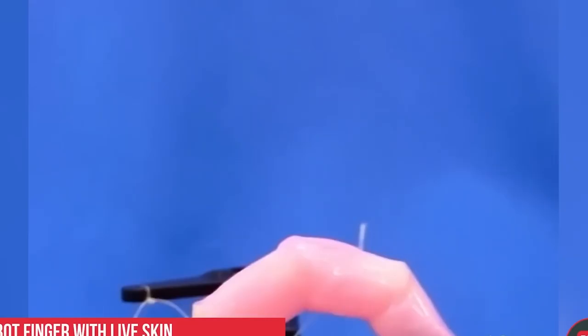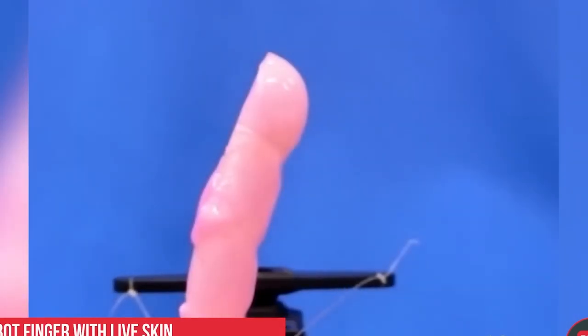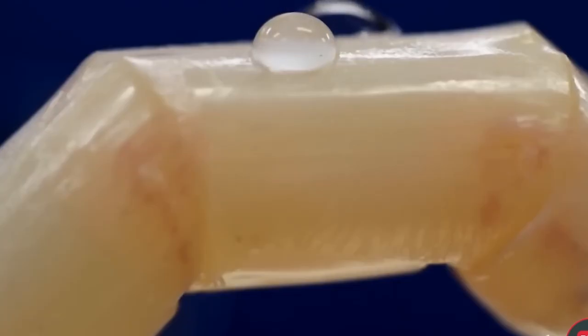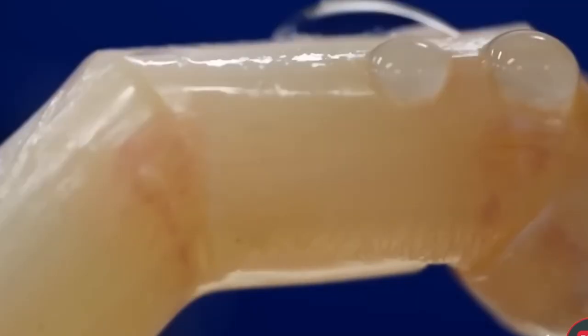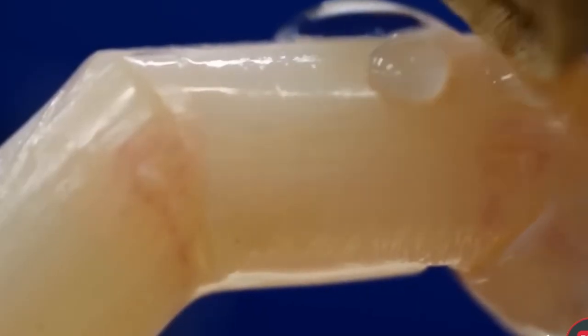Another robotic finger, without an epidermis on top but with a dermis-like layer, was utilized by the team as a comparison. Despite the finger's best efforts, the annoying bead eventually became trapped on the tip after many tries to flick it. The finger's epidermal layer provided it the ability to repel water, which allowed it to brush the bead away.